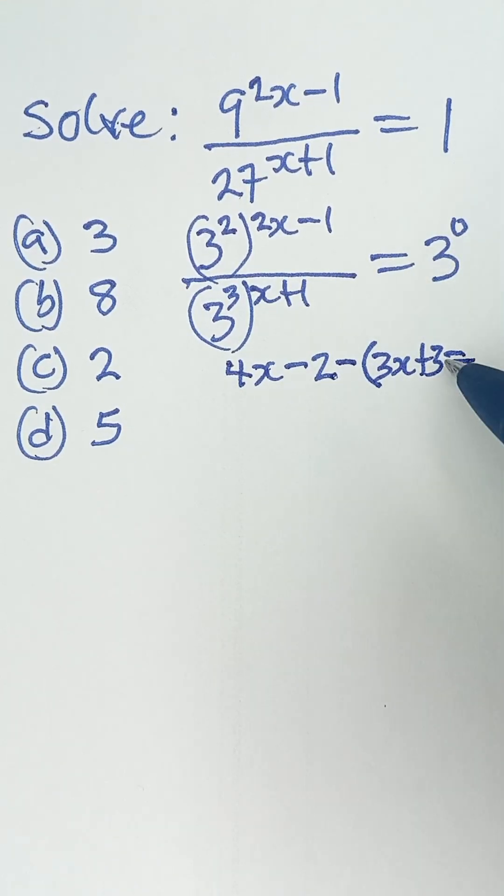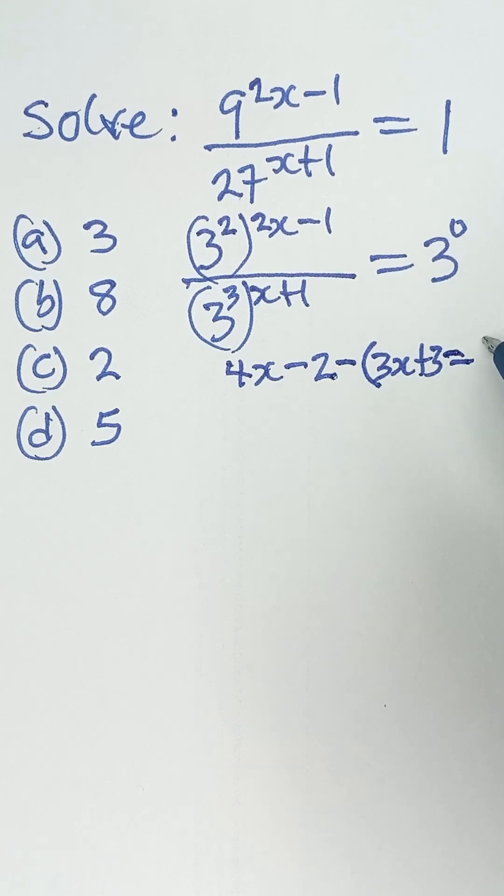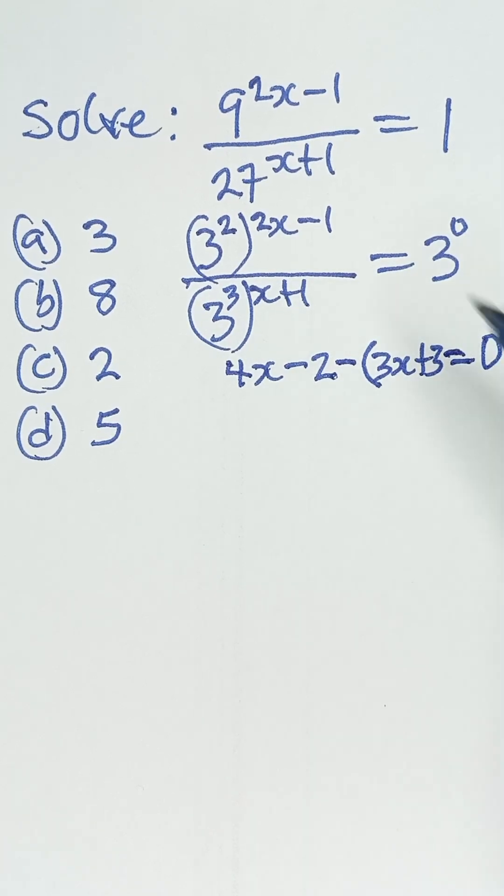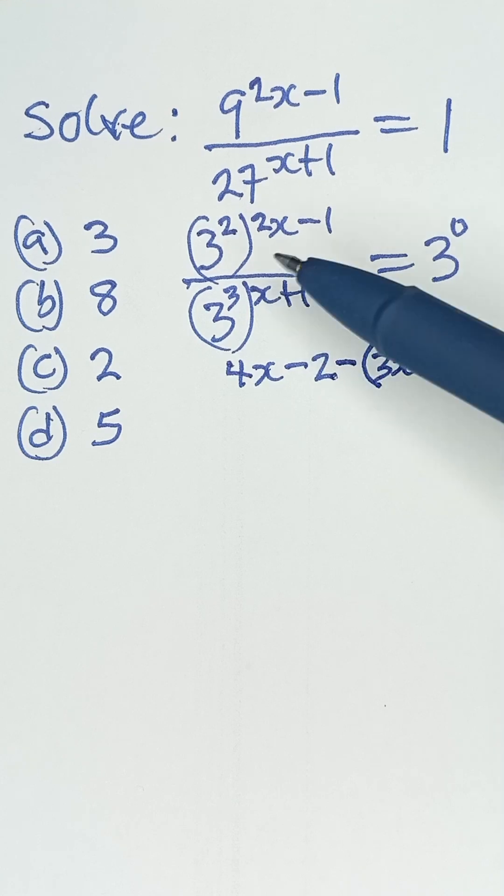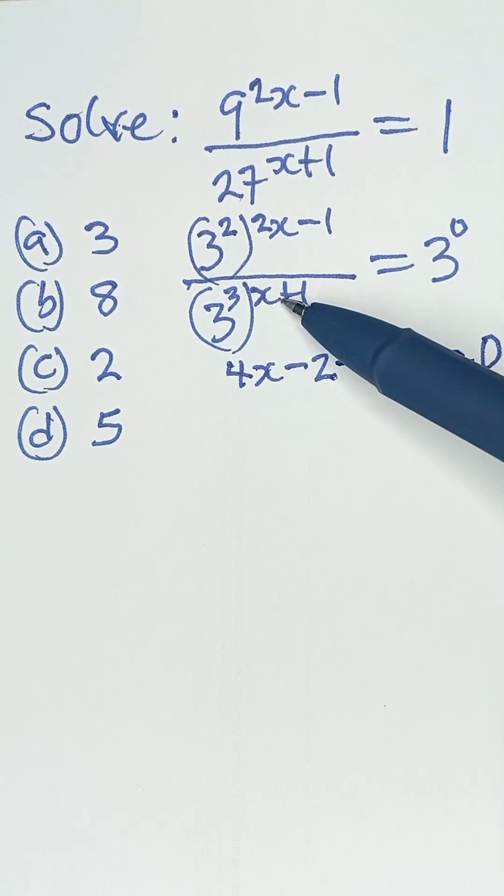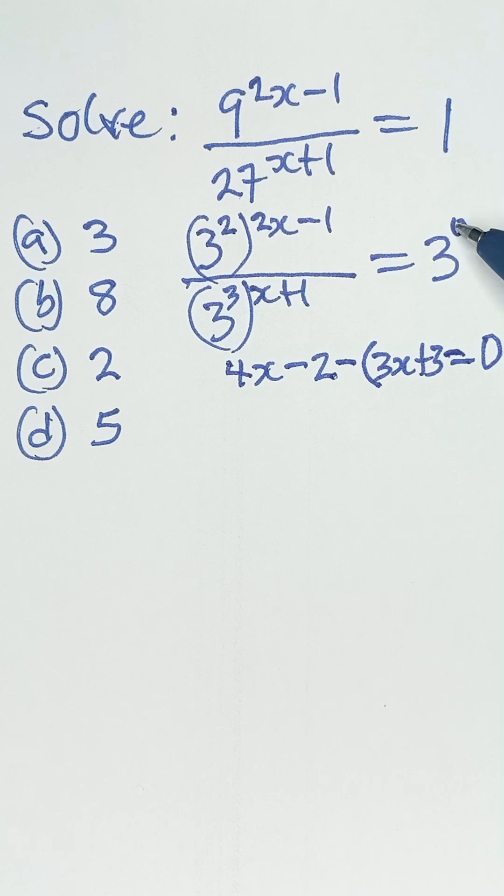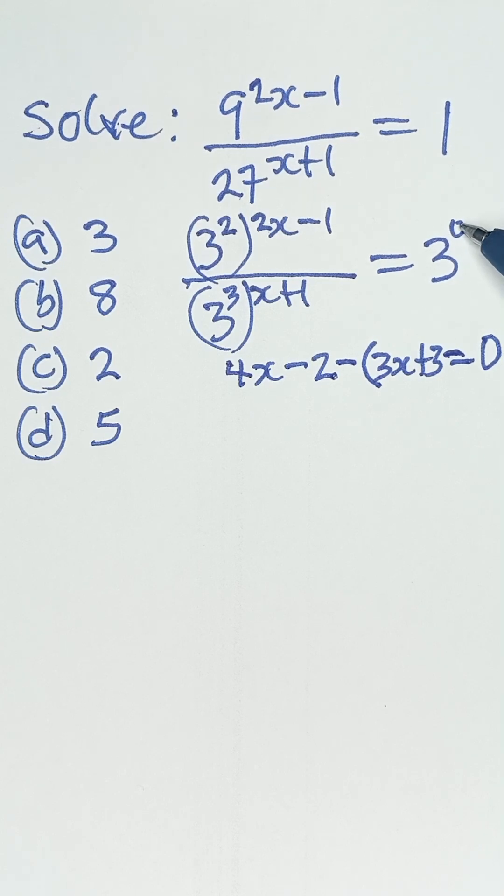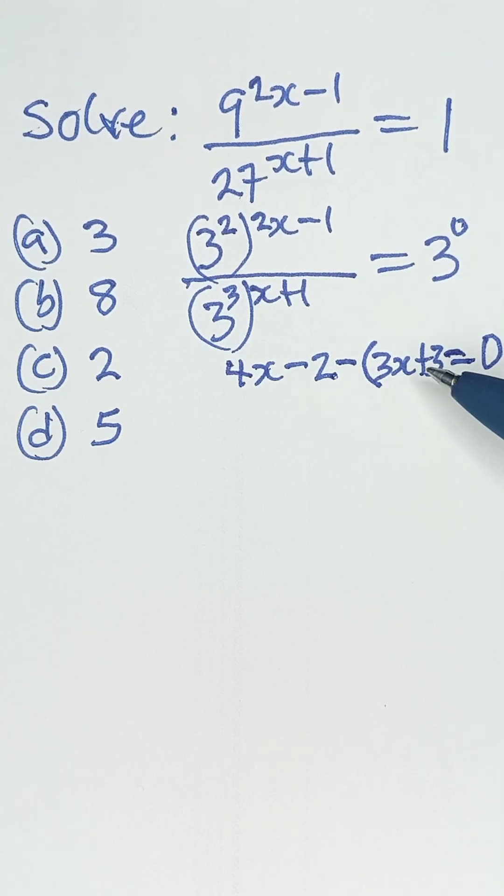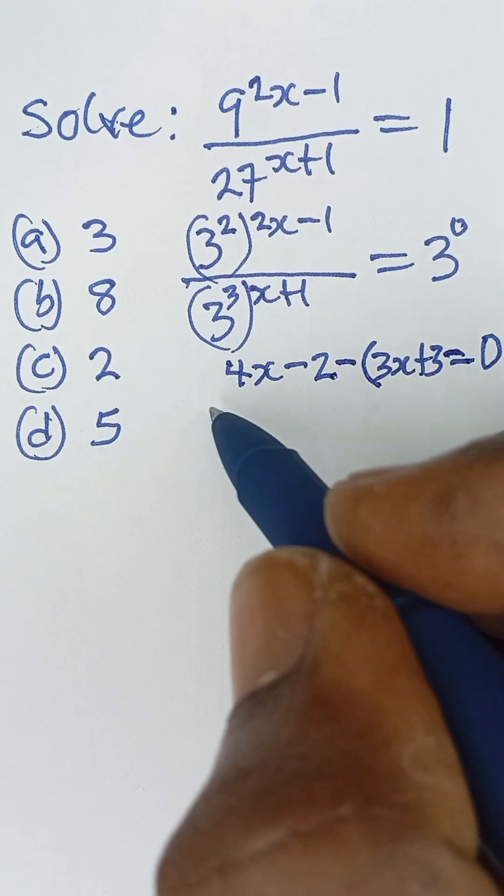3 raised to the power 0. We also take the power which is 0. So don't forget, what we have done here is we multiply this power, multiply this and this power, subtract this power. And because their bases are the same, we simply also equate the powers. So that is what we have done here, and that gives us